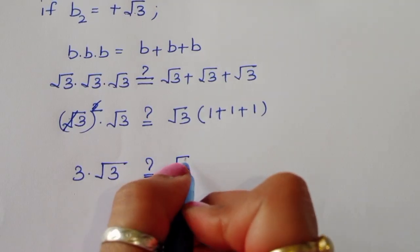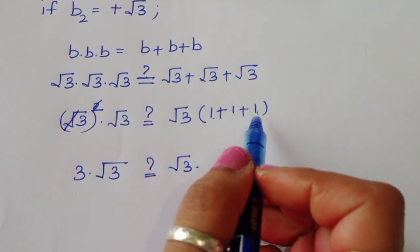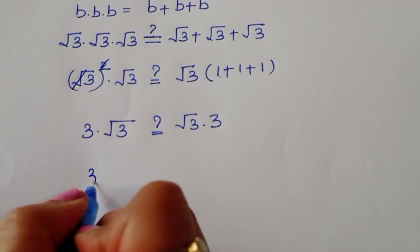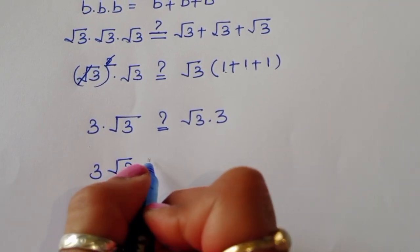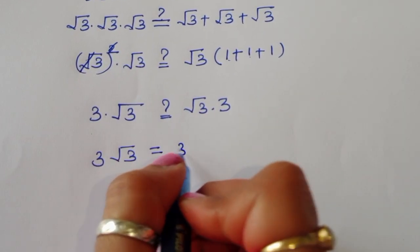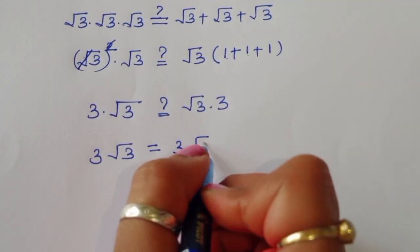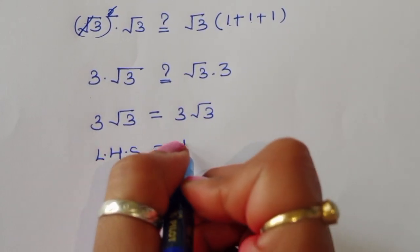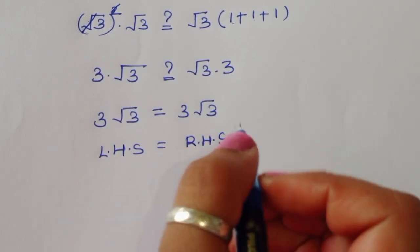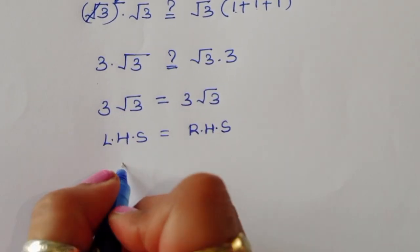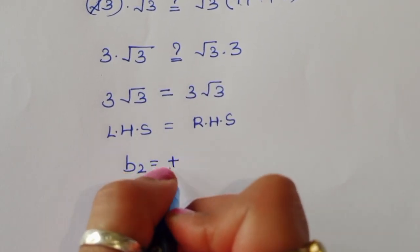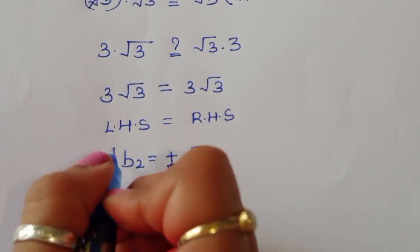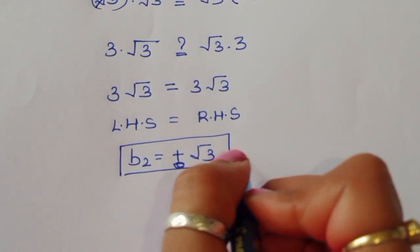So the left side is 3 times square root of 3, and the right side is square root of 3 times 3, which is also 3 square root of 3. LHS equals RHS, so b2 equal to positive square root of 3 is a correct solution.